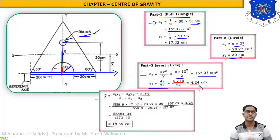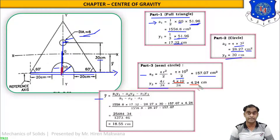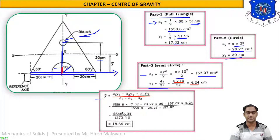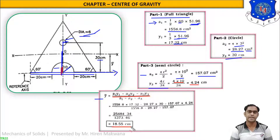The triangle is the positive section from which we deduct two sections: the small circle and the semicircle. So y-bar = (A1·y1 − A2·y2 − A3·y3) / (A1 − A2 − A3). Substituting all values, y-bar = 18.55 cm.